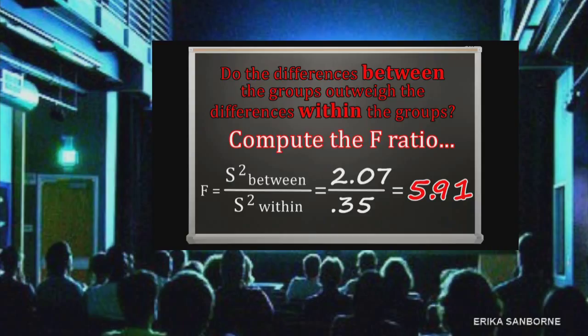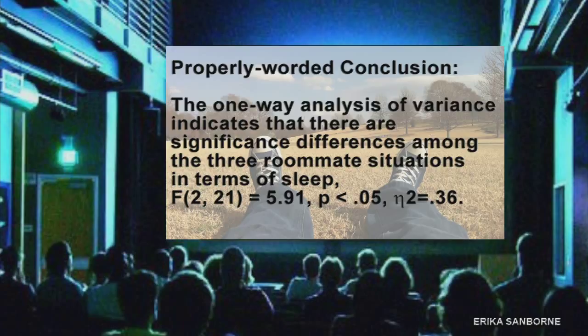The critical F ratio was 3.47, so this is a significant test. The one-way analysis of variance indicates that there are significant differences among the three roommate situations in terms of sleep.